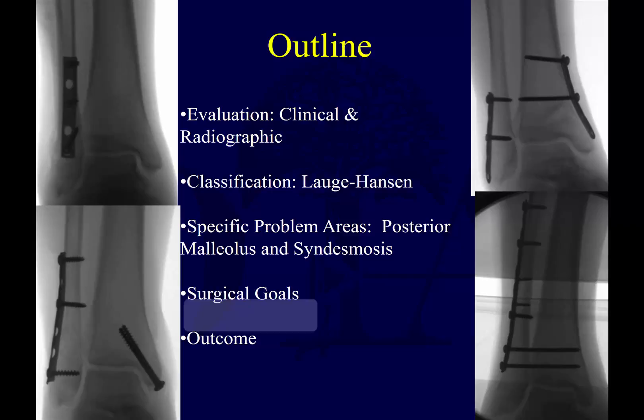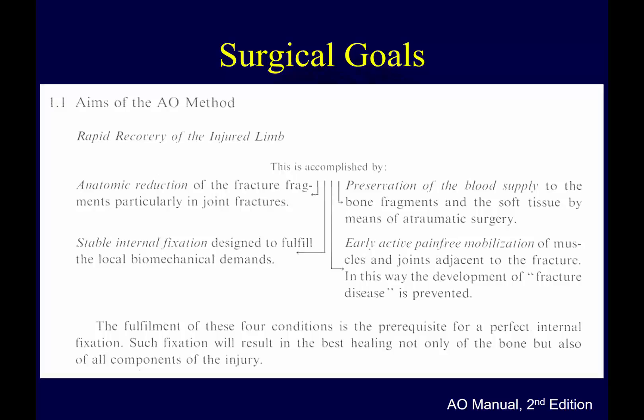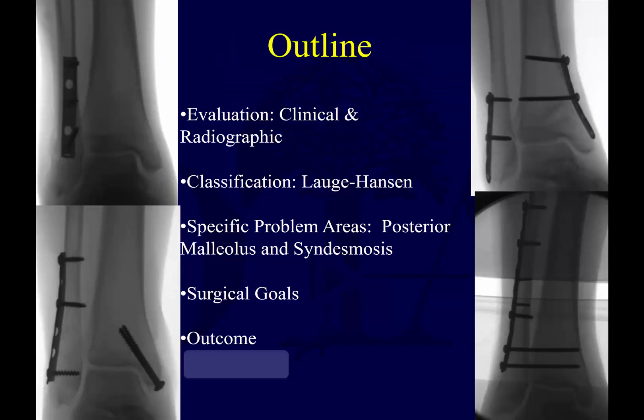This will be a fairly short video compared to the last two. Surgical goals arguably follow the AO principles, which is anatomic reduction of the fracture fragments at the joint, stable internal fixation, preservation of the blood supply, and early active motion. This essentially applies to malleolar ankle fractures, so it's worth noting and refreshing your memory about the main principles.